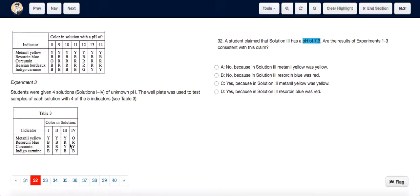Which means that the results of Experiments 1 to 3 are not consistent with the claim that solution 3 has a pH of 7.3, because at a pH of 7, resorcin blue is usually blue. So the answer is no, because in solution 3, resorcin blue was red.